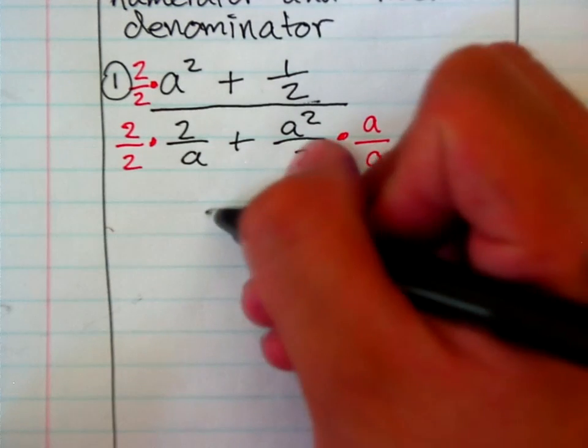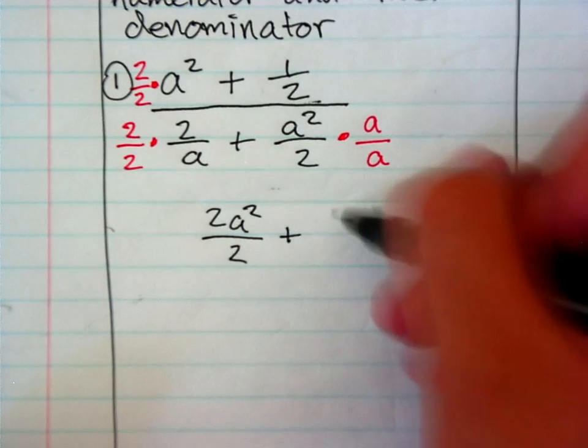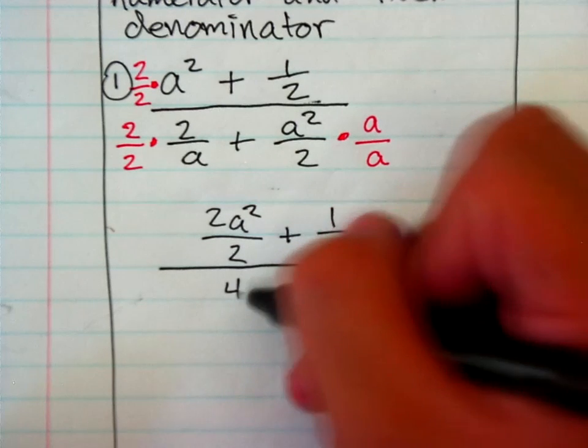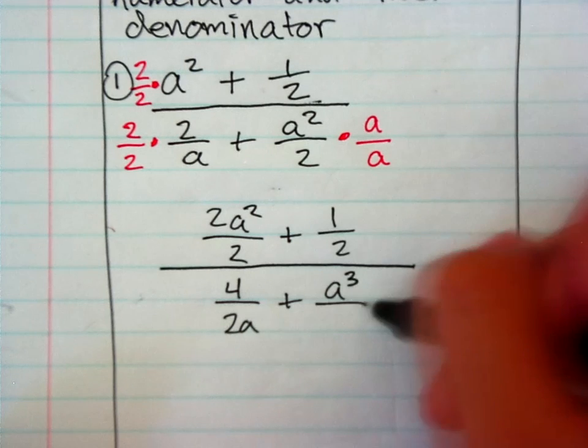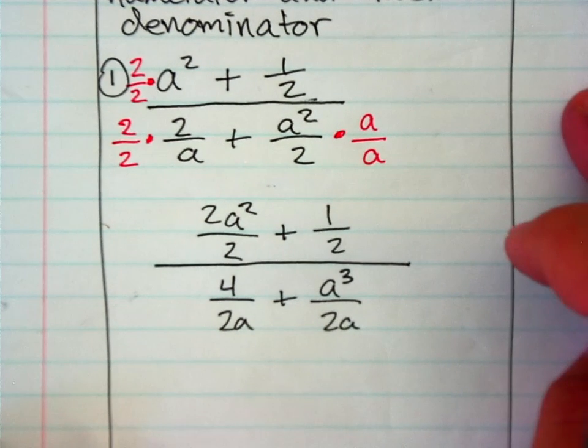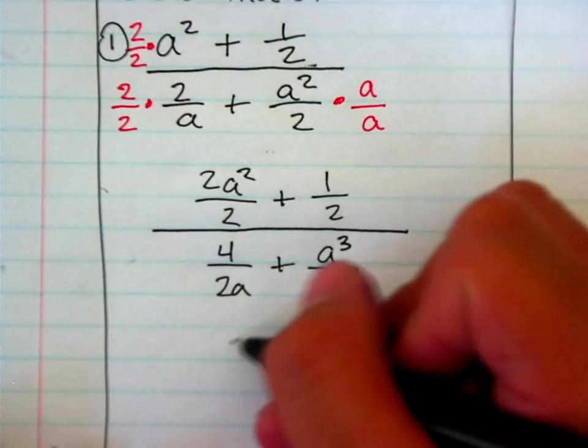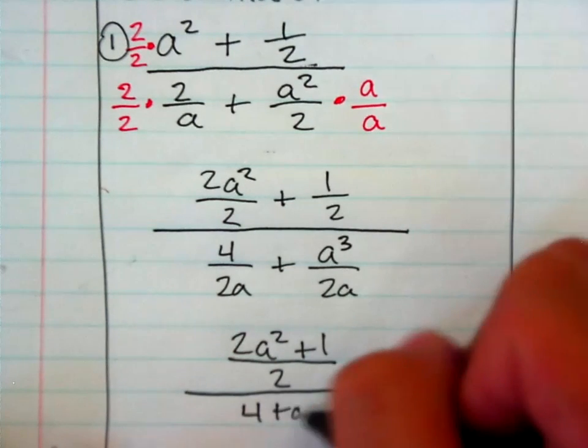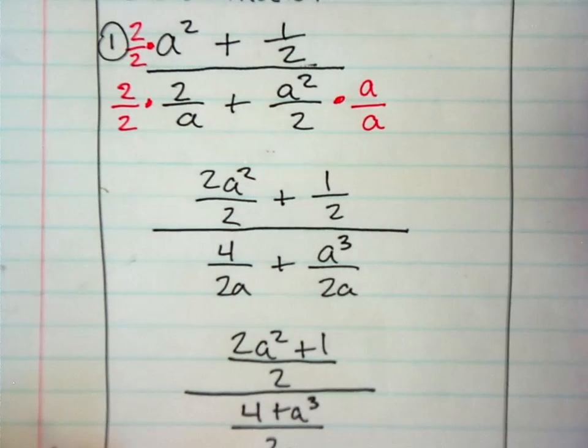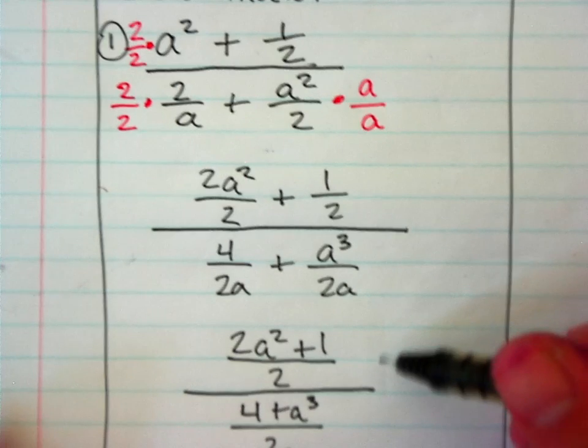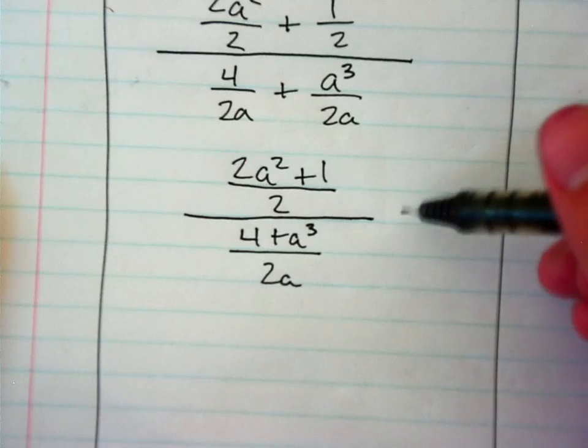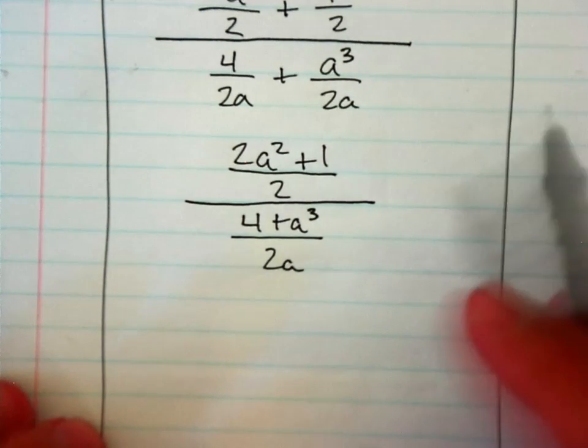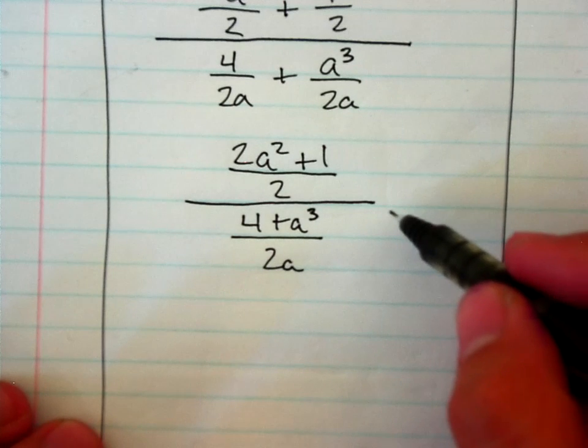Let's go ahead and rewrite our fraction now. So, up on top in the numerator, we have 2a squared over 2 plus 1 over 2. And that's going to all be over 4 over 2a plus a cubed over 2a. So, we have our common denominators now, which means we can add our numerators. So, let's go ahead and simplify that. I have 2a squared plus 1 all over 2. And then we have 4 plus a cubed all over 2a. So, at this point, we really can't simplify any further. The only thing to do is recognize, hey, we actually have a division problem. So, we have a fraction on top divided by a fraction on the bottom. We worked with this about two lessons ago, and we know that we're going to have to multiply by the reciprocal. So, I'm going to go ahead and set that up now.